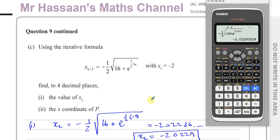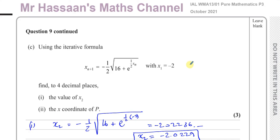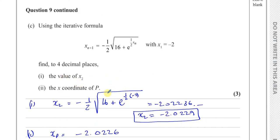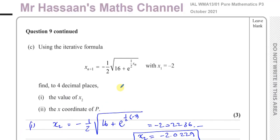And there we have completed question 9. Other questions from this paper can be found in the playlist in this area. Questions from this topic — the product rule and iteration — can be found under differentiation from P3 and the iteration playlist, including questions about justifying why a value is the x-coordinate of P. You can subscribe to the channel by clicking the link. Thank you for watching and see you soon.